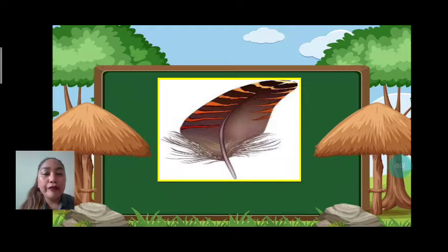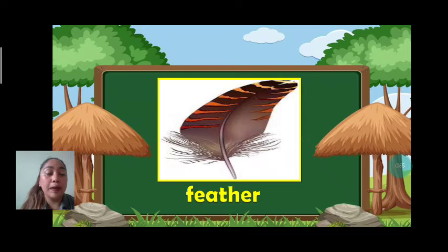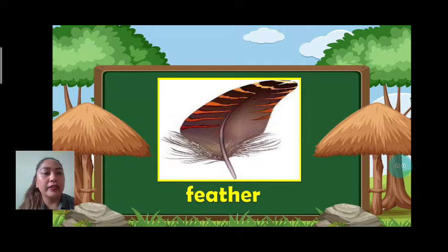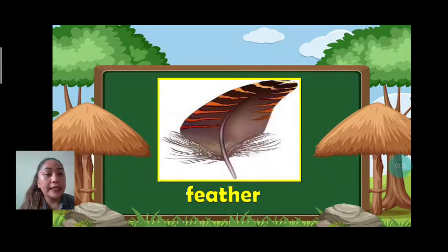Next, we have feather. Let's spell: F-E-A-T-H-E-R. Feather. Very good. What part of the bird is it? Feather. Great job.